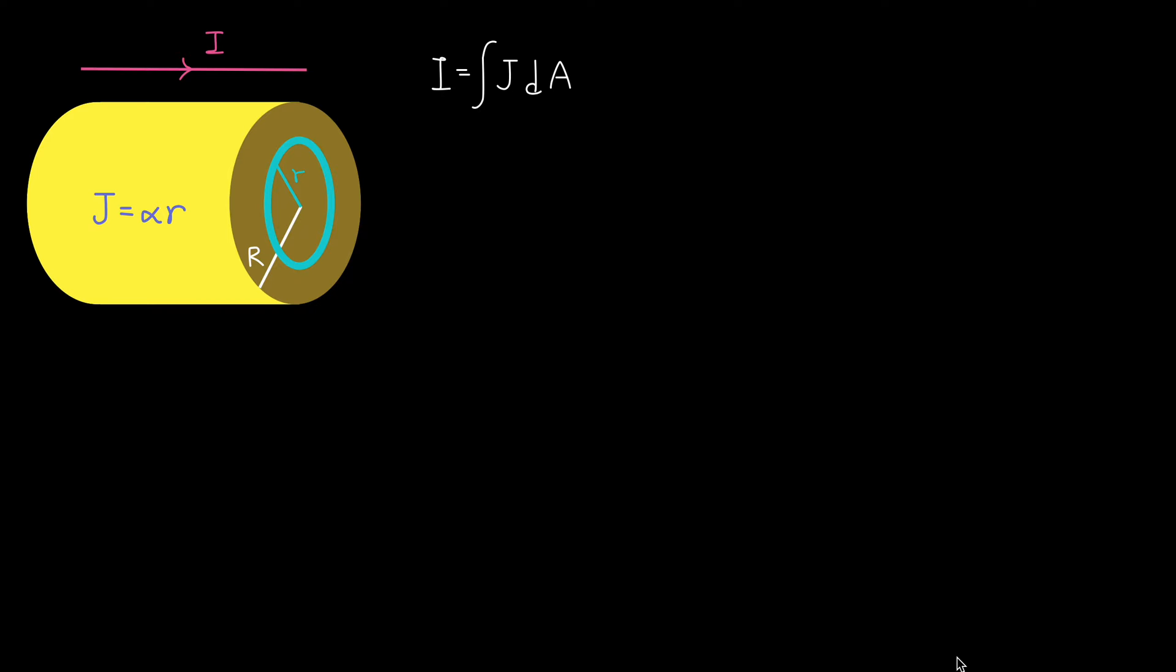Imagine dividing the cross-sectional area into thin, concentric rings, and each ring will be an area element. Now, why do we choose ring-shaped area elements for this problem? If you think about it, J is proportional to r, and each such ring will have a constant value of r. So over the ring, J will have a constant value.